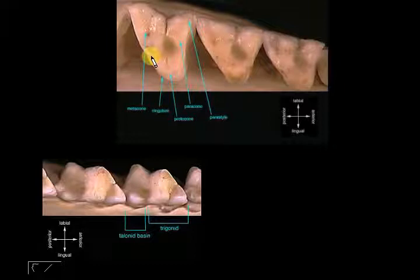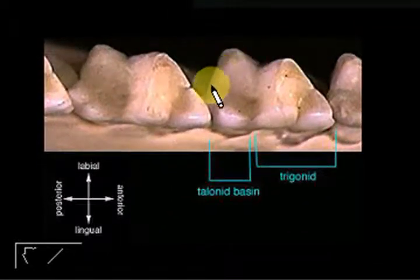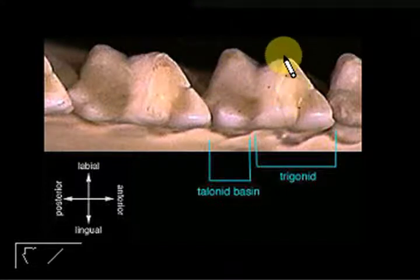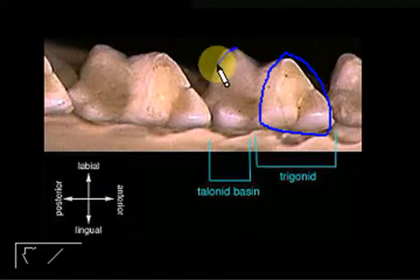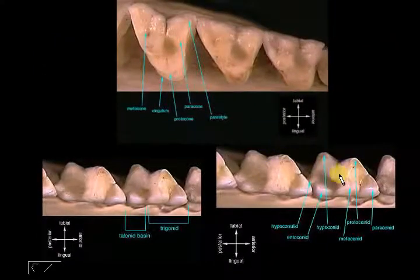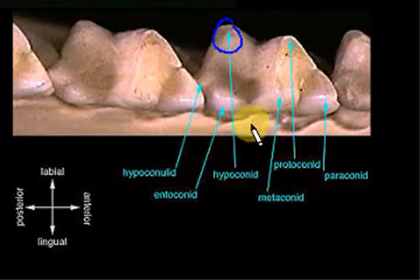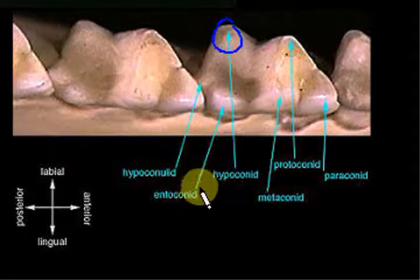For the lower jaw, the tribosphenic teeth look a bit different — there's an additional part. This triangular part is called the trigonid area, and the part at the back is the talonid basin. The hypoconid, because we are on the lower jaw, is found here. There are also smaller cusps: the hypoconulid and the entoconid. There are many names — very confusing, but it's important you know they have names.